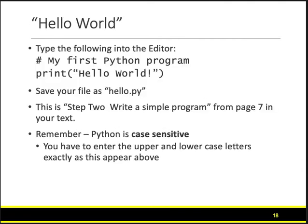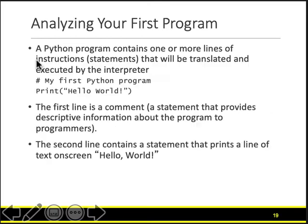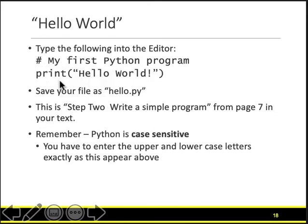Let's look at the first program. Once you have installed Genie, type the first two lines: a hash sign, then 'my first Python program'. Then write the word print, parentheses, quotes, 'hello world' with an exclamation mark, close quotes, close parentheses. Save your file with Control S or Command S on Mac and give it the name hello.py. Give it the full name with the .py extension — if you do not, it will not run.